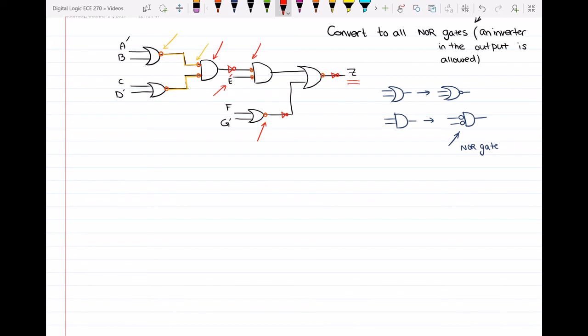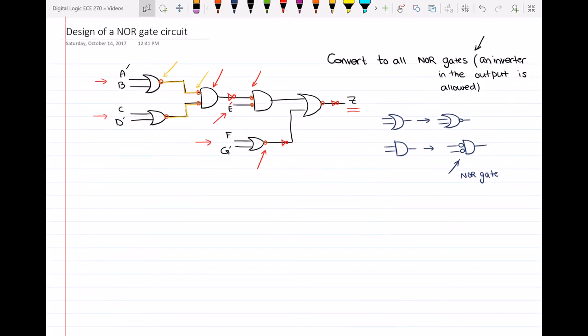And the rest of the variables like A prime, B, C, D prime, F, and G prime, we don't have to do anything with them because they are the variables that are driving a non-inverted input to these NOR gates. So what I mean are these variables here. So I hope you understand how we can convert to all NOR gates. Thank you for watching.